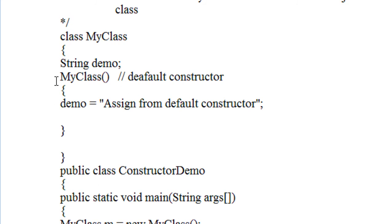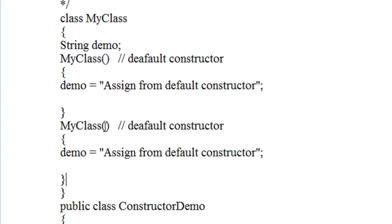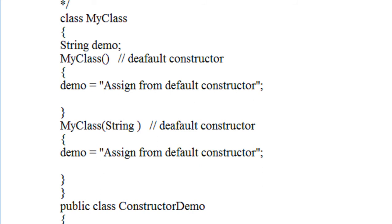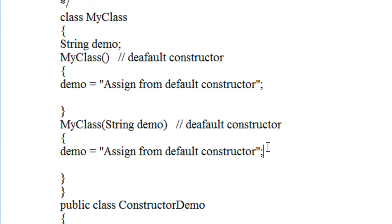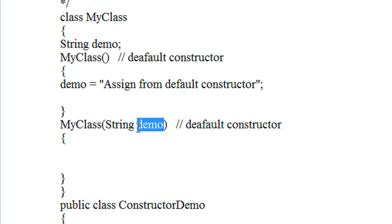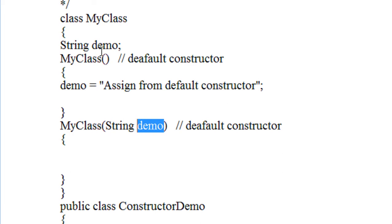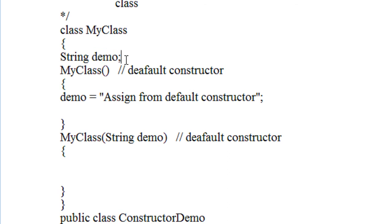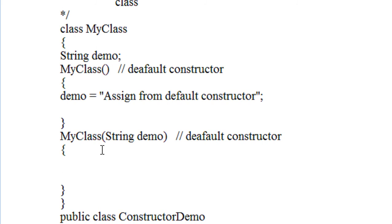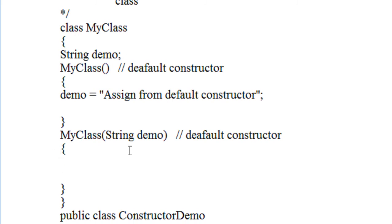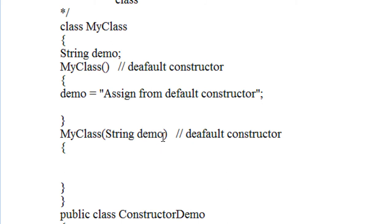Now I am going to create a parameterized constructor for the same class. Here is the parameterized constructor — I just create an argument here: a String called demo. Now I am going to assign the value of demo. The name of the argument is the same as the name of the variable, so there is a naming conflict. To solve this problem, there is a pointer called the 'this' pointer in Java. The 'this' pointer resolves the collision between the arguments of a constructor or method and the actual class variables.